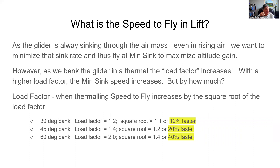At 30 degrees of bank, the load factor is 1.2; the square root of 1.2 is about 1.1, so you fly 10% faster. At 45 degrees of bank, the load factor is 1.4, square root is about 1.2, so we fly about 20% faster than min sink. If we're really wrapping it up into a 60-degree bank, the load factor is 2.0, square root is about 1.4, so we fly 40% faster than min sink — compared to level wings with a load factor of 1.